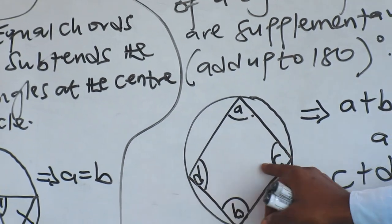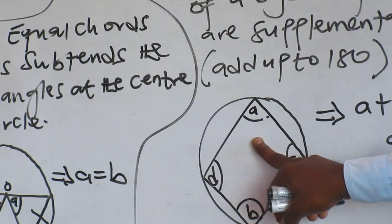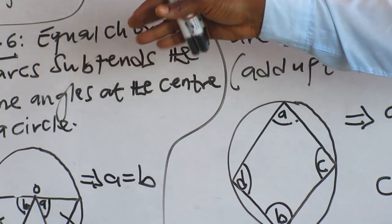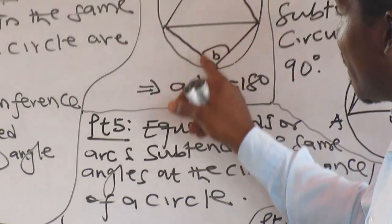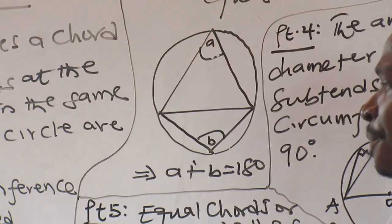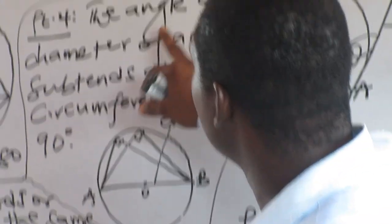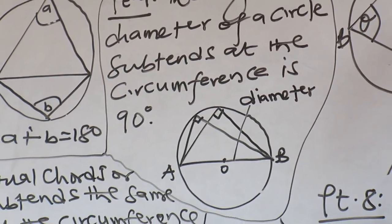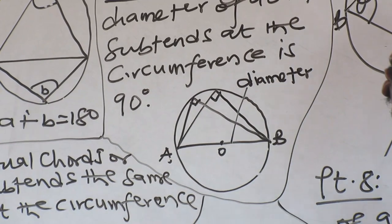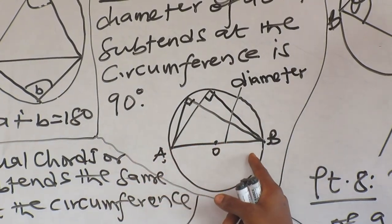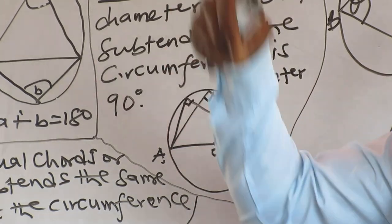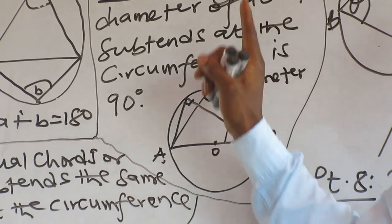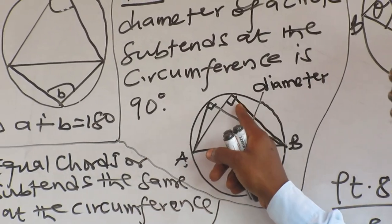Properties three and eight are the same, so you manage one and you've managed the trade-off. Property four: the angle a diameter of a circle subtends at the circumference is 90°. A diameter is a line which passes through the center of the circle, and the angle it forms at the circumference is 90°.